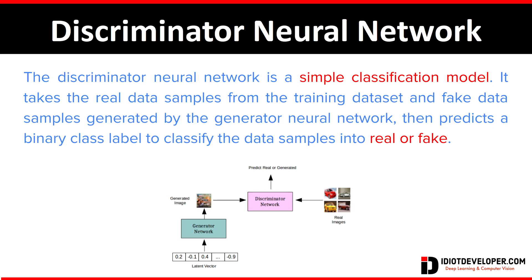Now we'll discuss the discriminator neural network. The discriminator neural network is a simple classification model. It takes a real data sample from the training dataset and a fake data sample generated by the generator neural network, then predicts a binary class label to classify the data samples into real or fake. Its job is to distinguish whether the given data sample is fake or real.